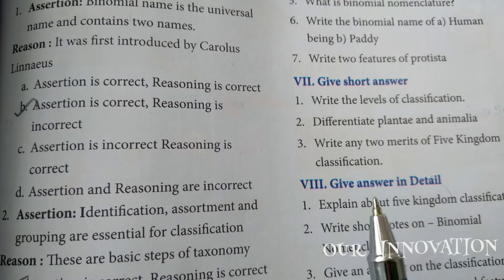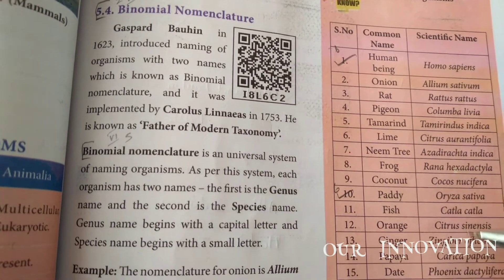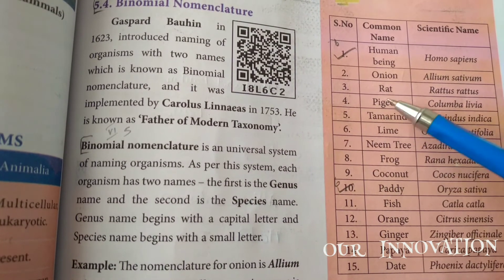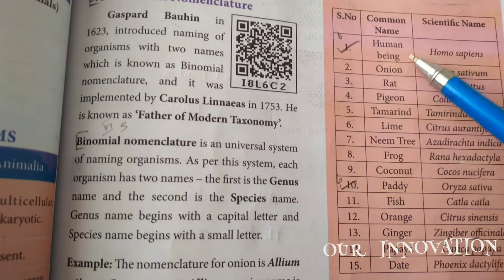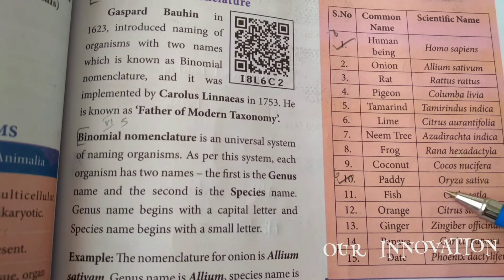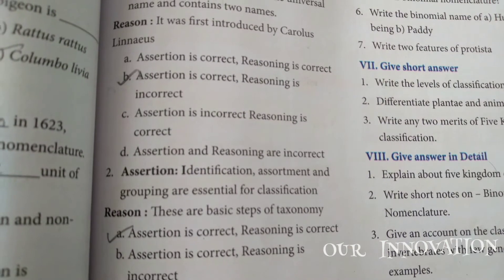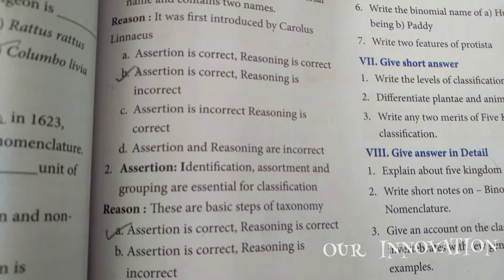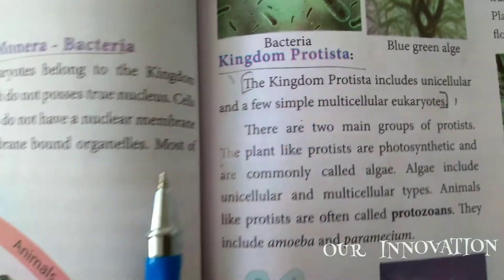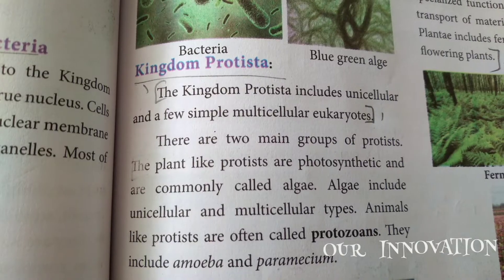Sixth: write the binomial name of human being and paddy. Page number 83. There is a table of common names and scientific names - copy the human being name and paddy with their scientific names. Seventh: write two features of Protista. Page number 81. The kingdom Protista includes unicellular and few simple multicellular eukaryotes.